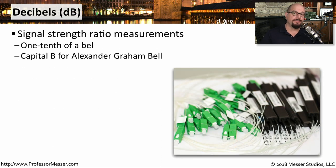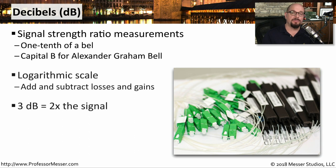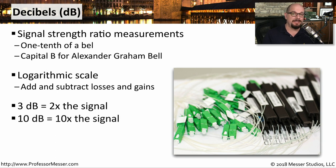One way to numerically quantify the signal strength or loss of a signal is to use decibels. A decibel is literally one tenth of a bell, and the abbreviation is dB — the B is capitalized in honor of Alexander Graham Bell. Decibels are measured logarithmically. So if you were to measure twice the amount of signal across a line, you would say that it had increased three decibels. If you increase the signal 10 times, the difference is 10 dB.